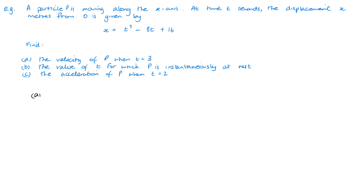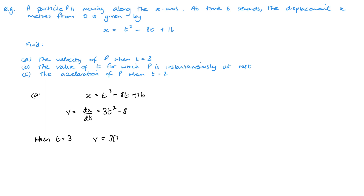For part a, we need to find the velocity when t = 3. We have displacement x = t³ − 8t + 16. Velocity is the rate of change of displacement, so we differentiate to get v = 3t² − 8. Substituting t = 3: velocity = 3(9) − 8 = 27 − 8 = 19 metres per second.